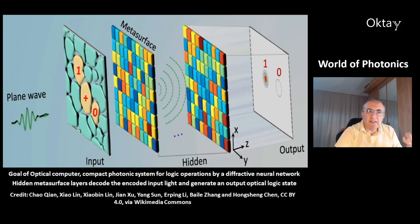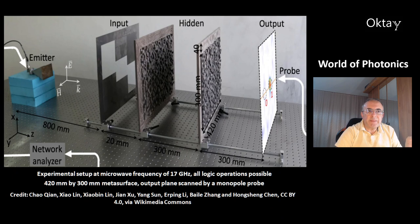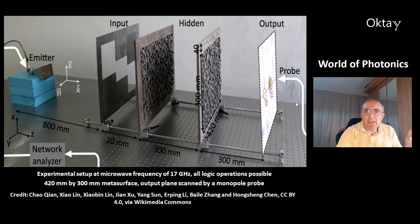One goal in photonics is the construction of an optical computer. This is an example of a compact photonic system for logic operations by a diffractive neural network. The wave arrives and passes through hidden metasurface layers, which decode the coded input light and generate an output optical logic state. The experimental setup works at a microwave frequency of 17 GHz, all logic operations are possible, the metasurface measures 120 mm by 300 mm, and the output plane is scanned by a monopole probe.